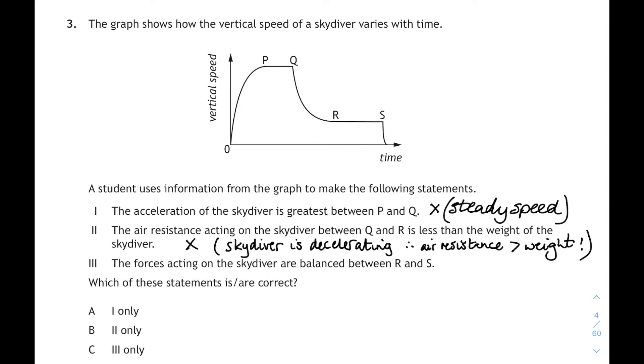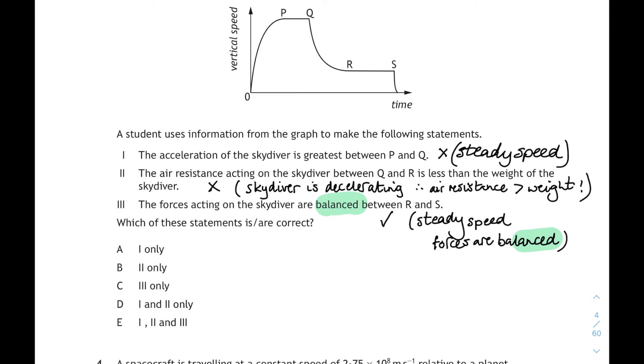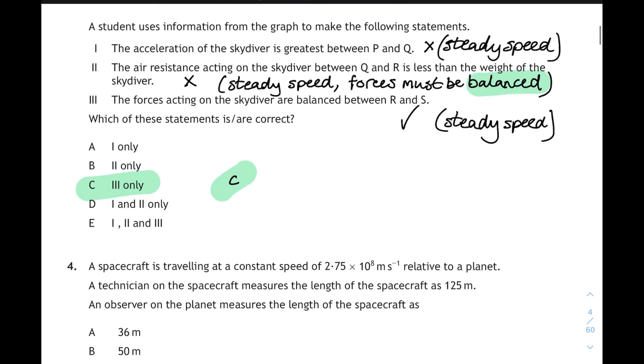Statement 3: The forces acting on the skydiver are balanced between R and S. Well, it's a steady speed. So yes, they are. So when you're at steady speed, the forces are balanced. So statement 3 only. That means our answer is C.